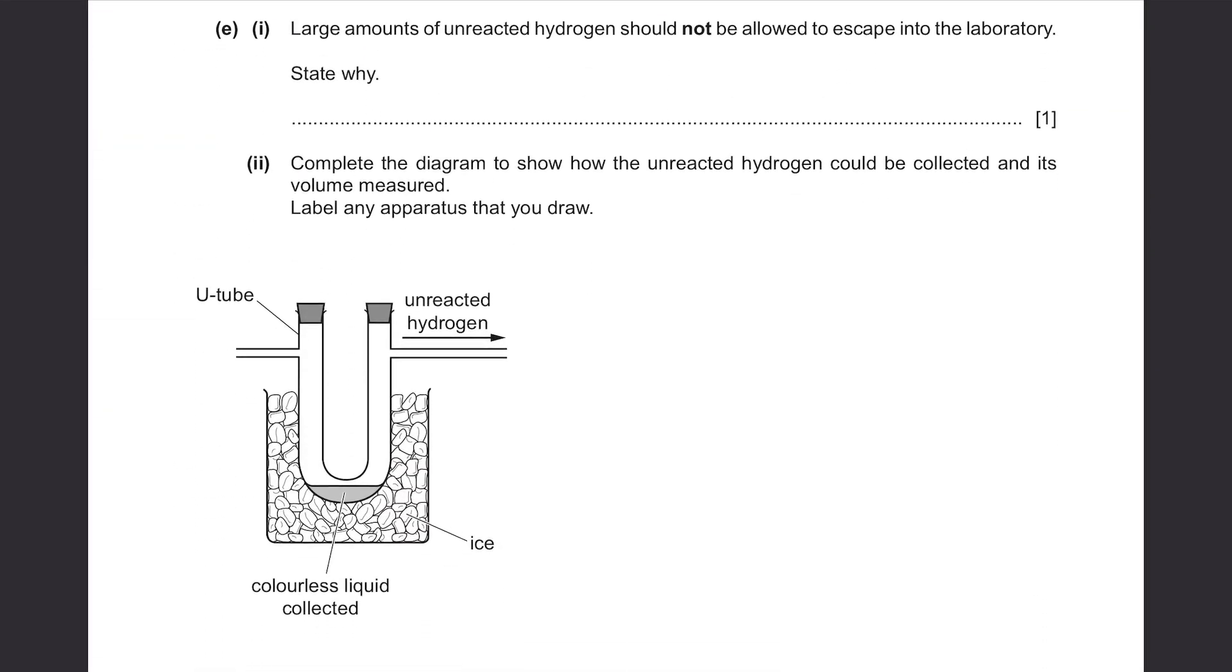Part E: Large amounts of unreacted hydrogen should not be allowed to escape into the laboratory state why. Hydrogen is famous for being a very flammable substance. It can explode easily if there's just a little bit of heat. So it's because it's flammable.